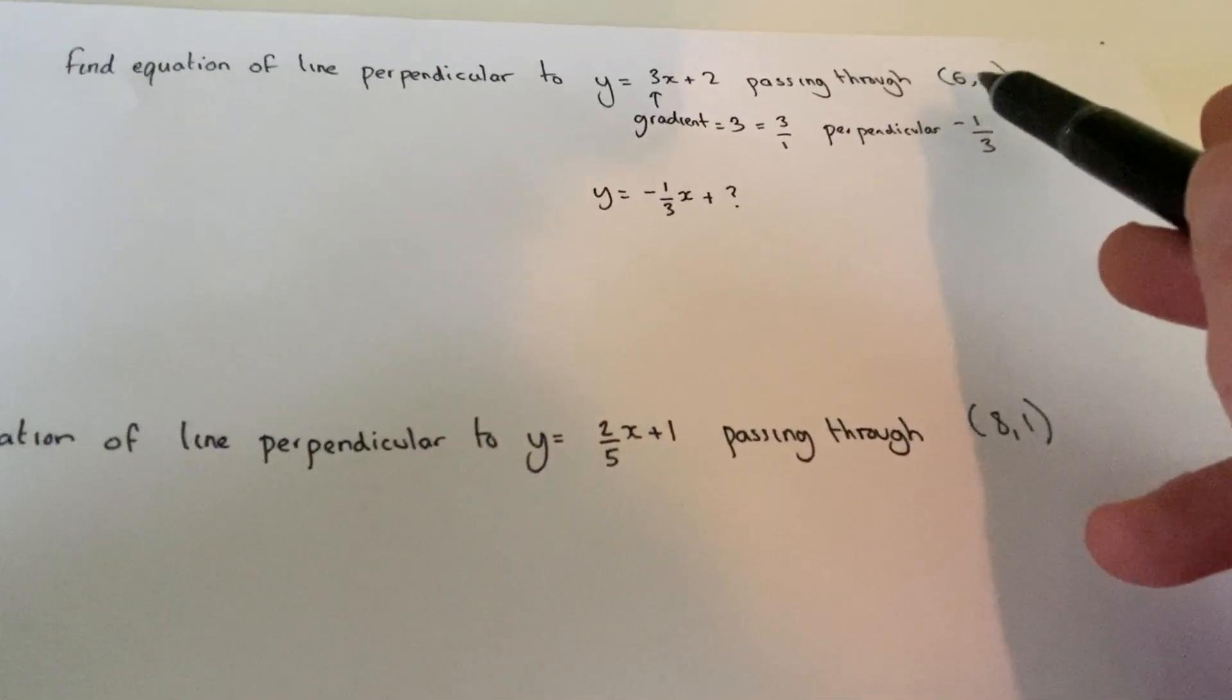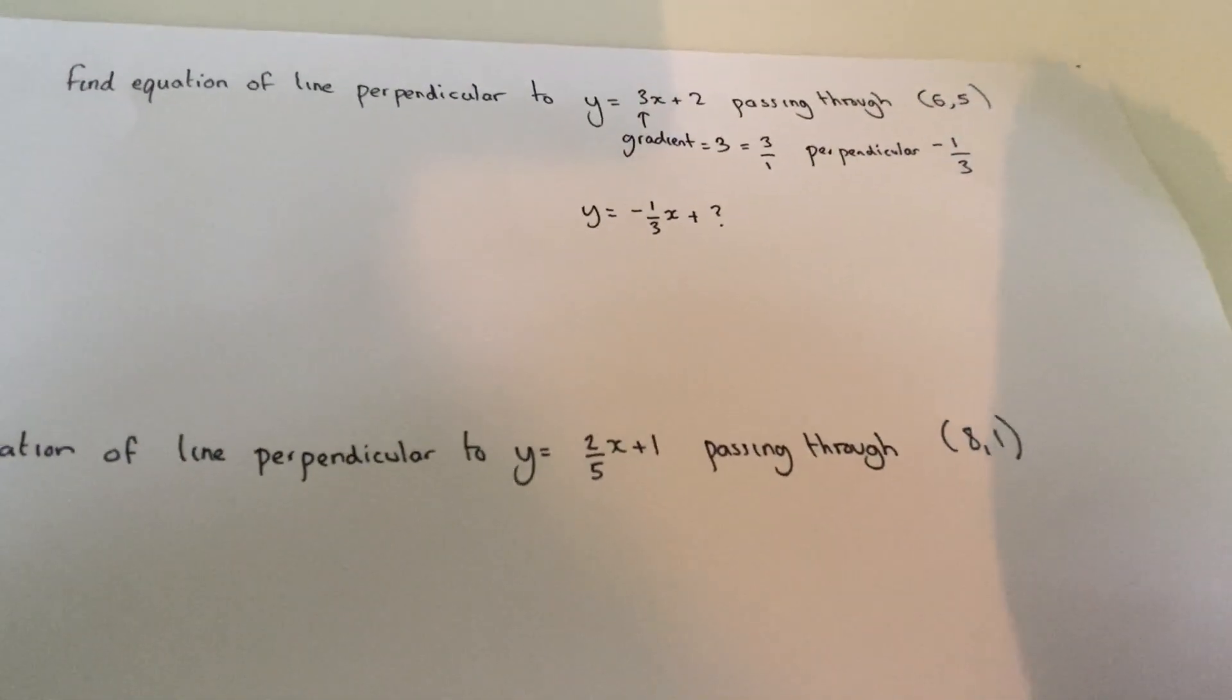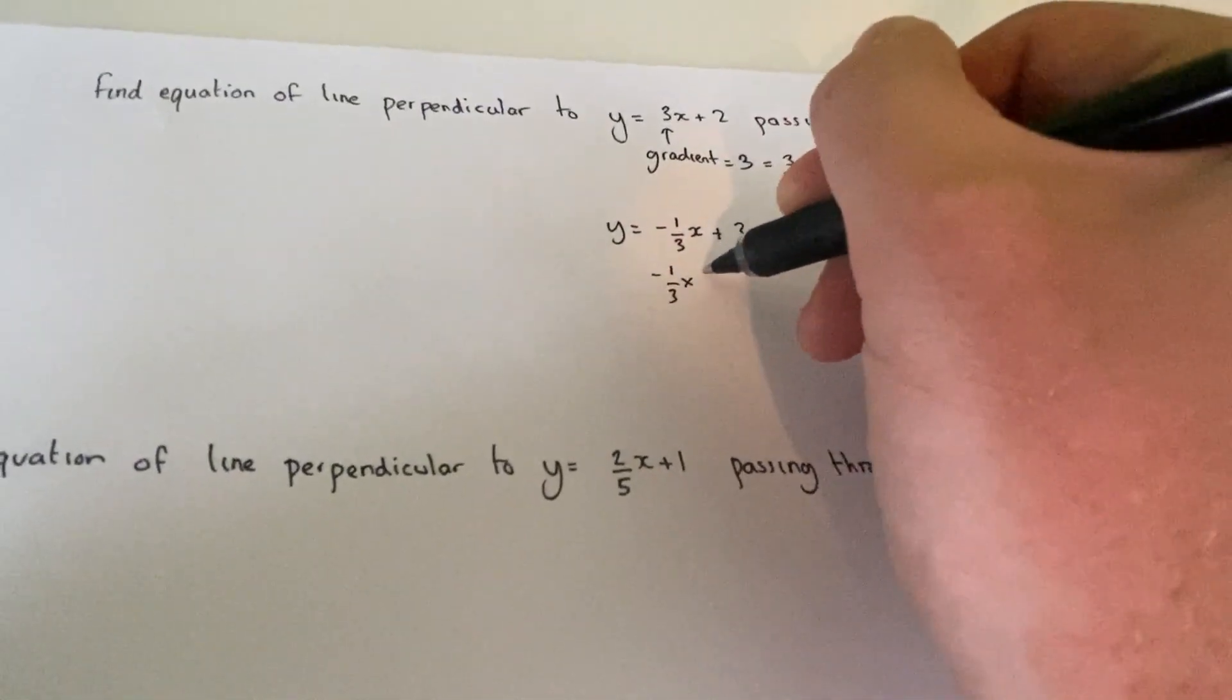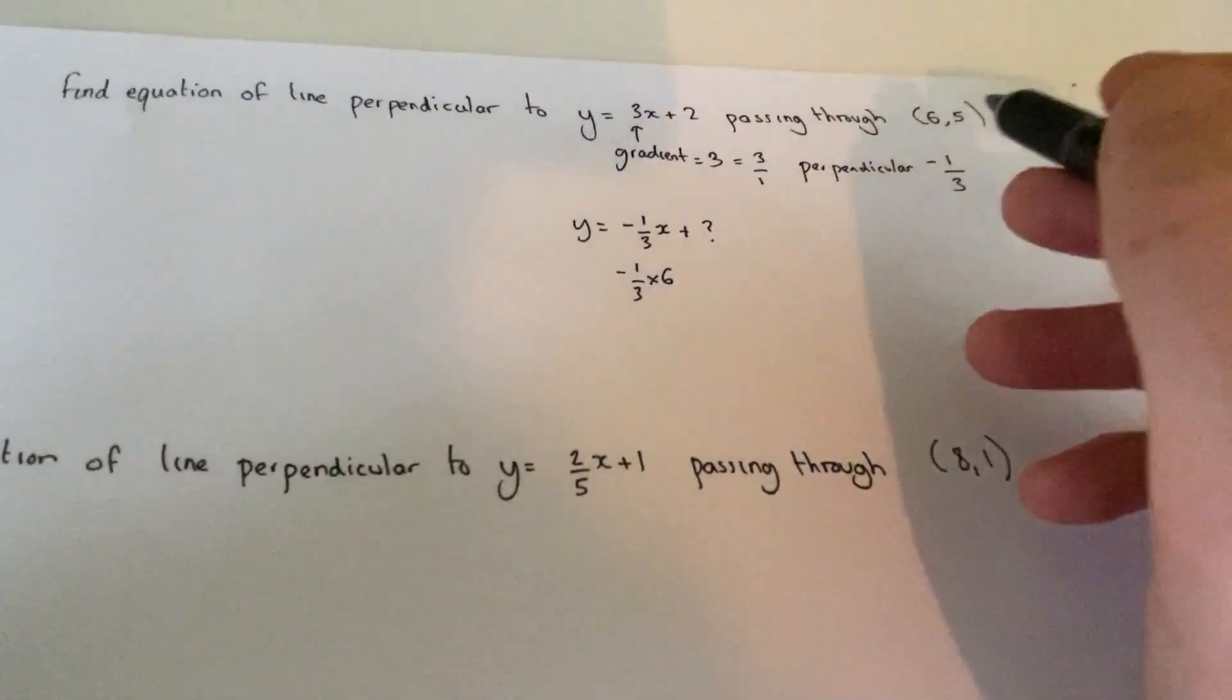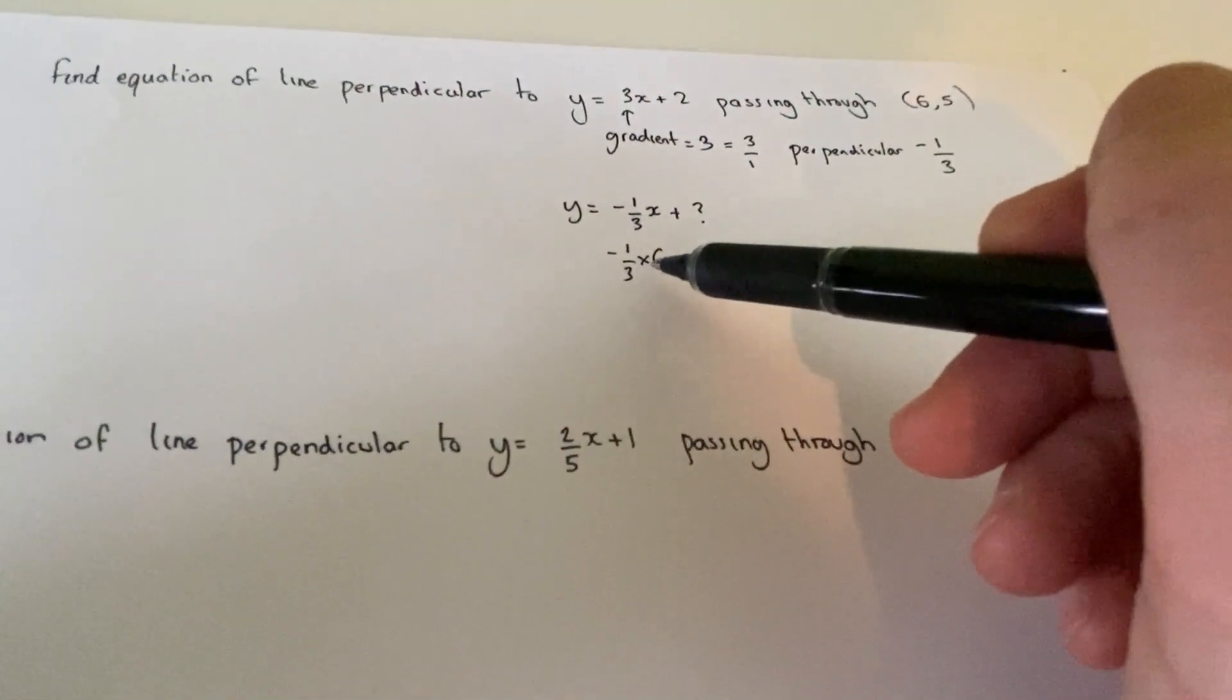So if I sub x equals 6 into this equation, the answer should equal 5. Now what this means is that if I work out minus a third times by 6, because the x-coordinate is 6, then to do this, 6 divided by 3 is 2.